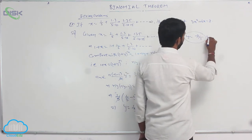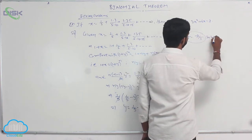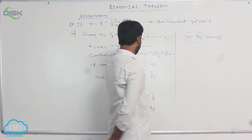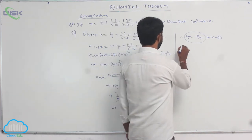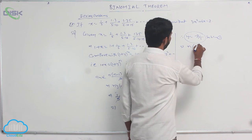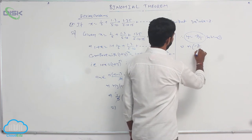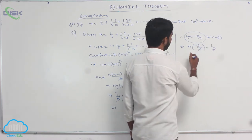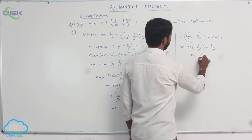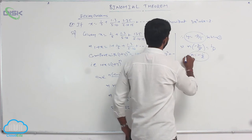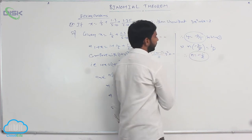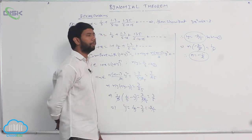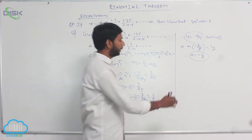Substituting in condition 1: n · (−2/5) = 1/5. The 5s cancel, giving n = −1/2. Therefore the value of n is −1/2. So y = −2/5 and n = −1/2.